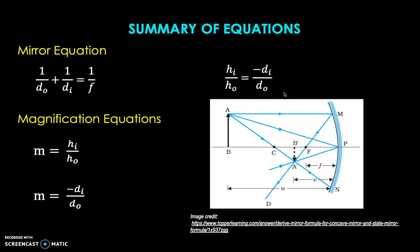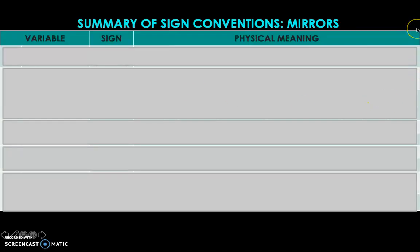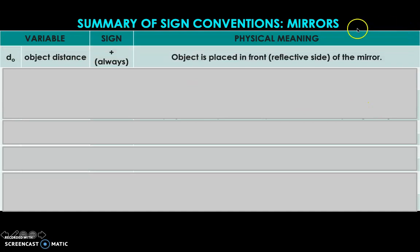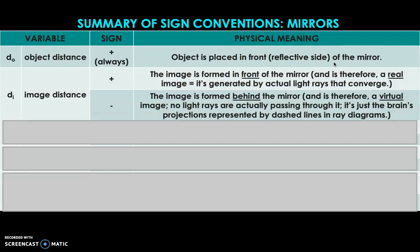We have to look at the given in the problem to know whether this would be applicable. For the sign conventions, first we have the object distance, which is positive if the object is placed in front or on the reflective side of the mirror. It's always positive because the object will always be placed in front of the mirror. Next, we have the image distance — it's usually the required to find in a problem, and when it appears as positive in the final answer, it means the image is formed in front of the mirror and is therefore a real image.